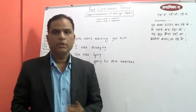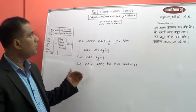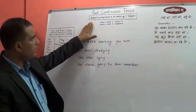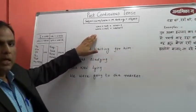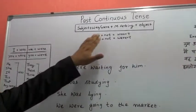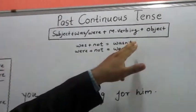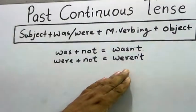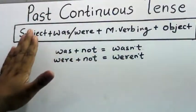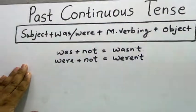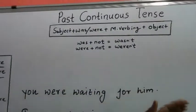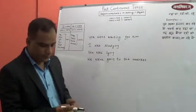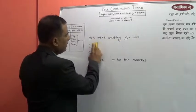After positive, now let's learn how to make negative sentences, which is not very difficult. The structure uses 'was + not', and in combined form we can say 'wasn't'. Similarly 'were + not' becomes 'weren't'. That's the only change in the structure of this tense for negative. Now we will try to take the same examples and convert them into negative.